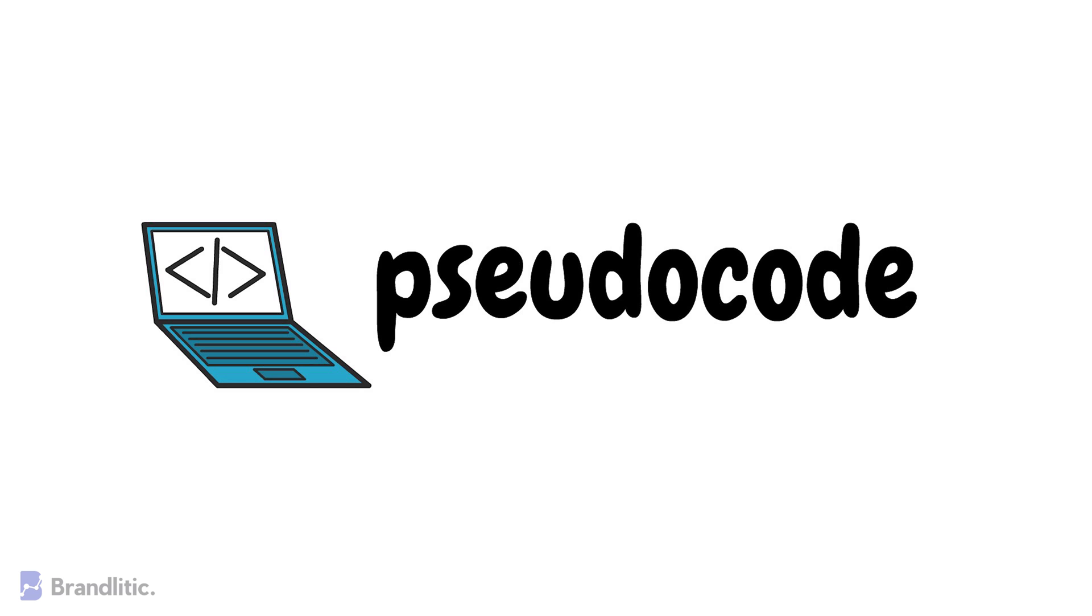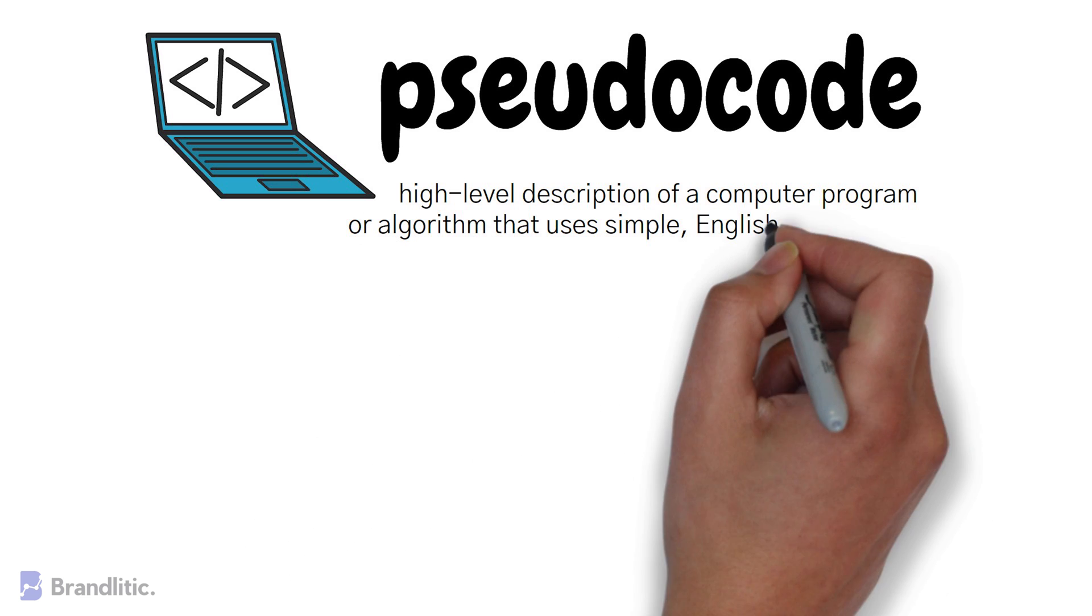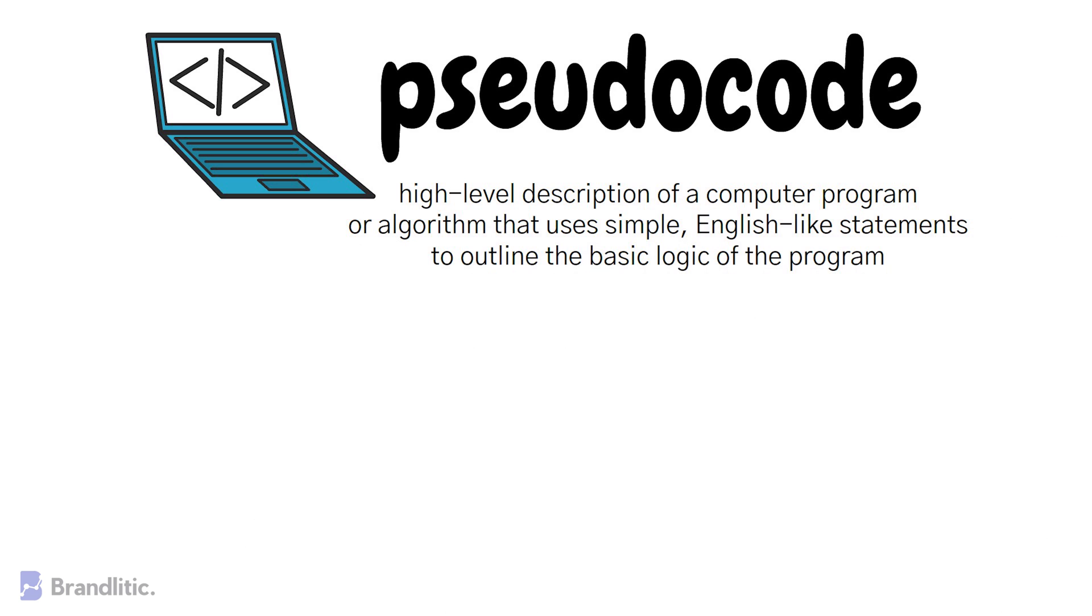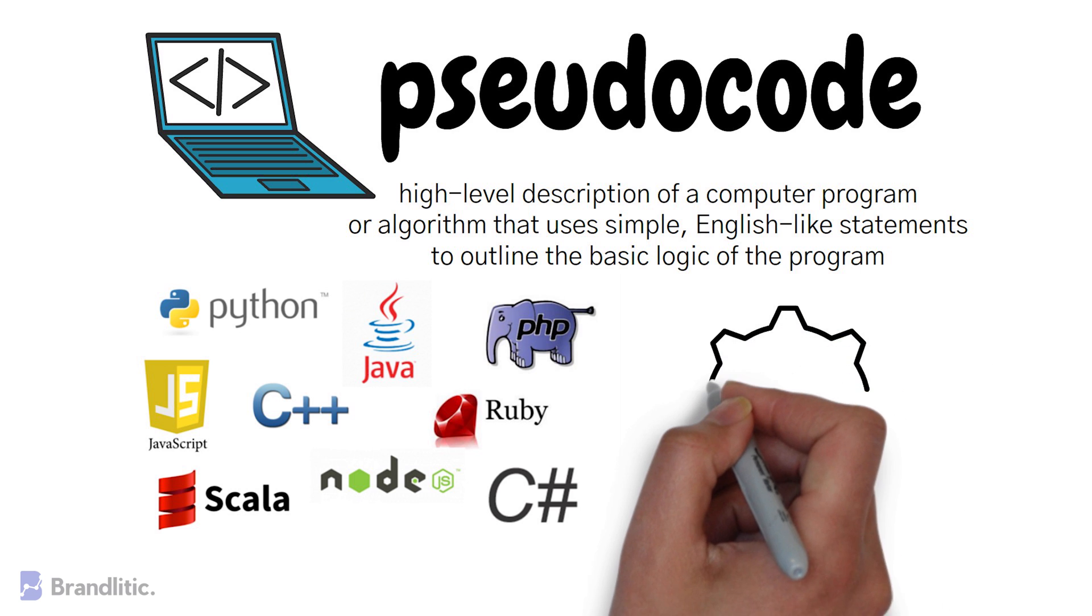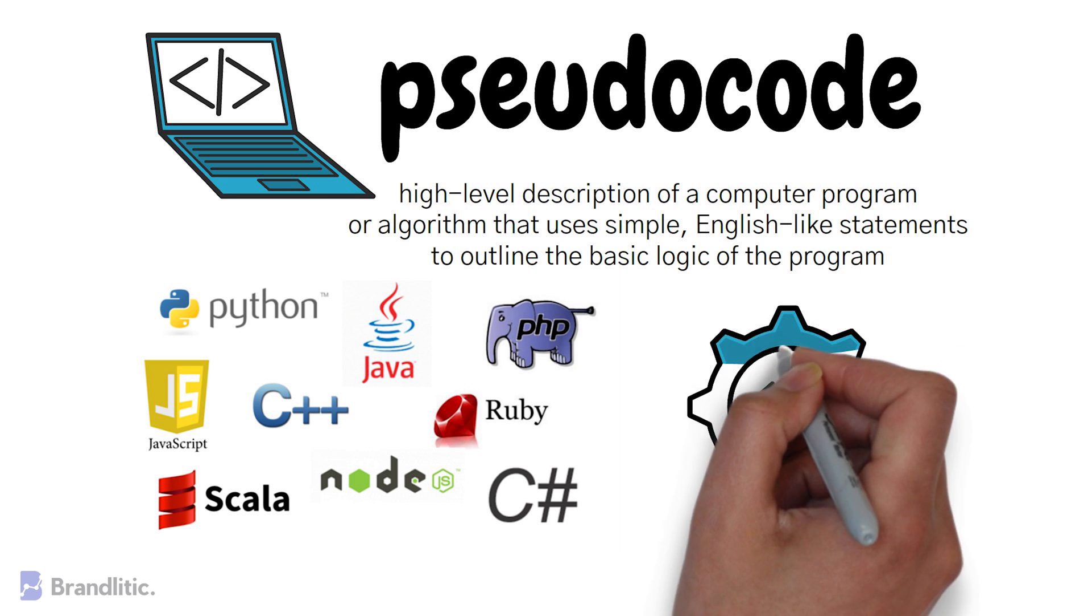So, pseudocode is a high-level description of a computer program or algorithm that uses simple English-like statements to outline the basic logic of the program. It's not written in a specific programming language but instead provides a clear outline of steps that need to be taken to solve a problem or complete a task.